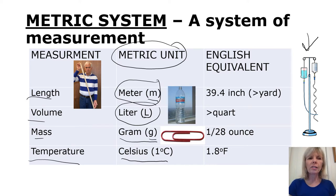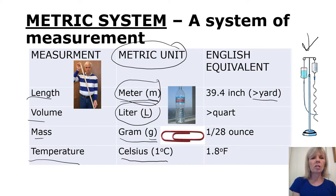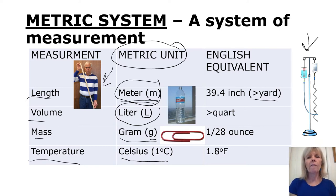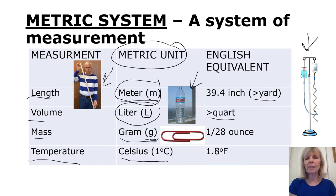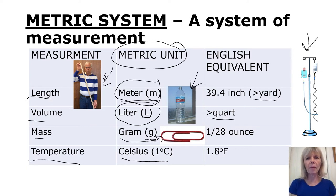I also want you to know the approximate size these numbers are. I have English equivalents here — you don't have to remember those exact numbers, but a meter is a little bit bigger than a yard. A liter is a little bit larger than a quart. A gram is about the mass of a paper clip — about one twenty-eighth of an ounce, which gives you an idea it's a pretty small number. And the metric unit for temperature is Celsius, which will be a smaller number than the same temperature in Fahrenheit.